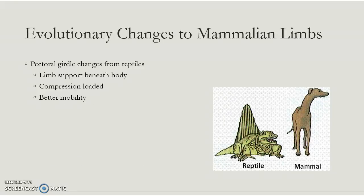I also like to show you that we have evolutionary characteristics that differentiate us between different organismal groups. Here you have reptiles and you have mammals in this image — who even knows what kind of mammal that's supposed to be, but it's a mammal.